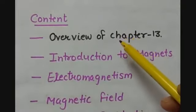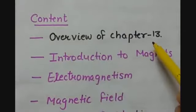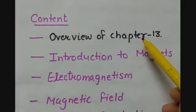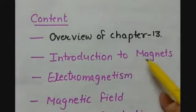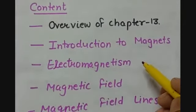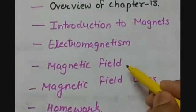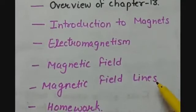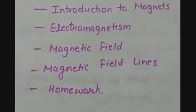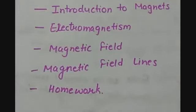In this lecture, first we will see the overview of chapter number 13 and how we are going to proceed. Then we will start with our first topic, that is introduction to magnets. Then we will cover electromagnetism, and further we will study magnetic field and magnetic field lines. At the end we will see the homework and homework solutions of the pretext assignment given in previous lectures, or we can discuss that solution in another video.